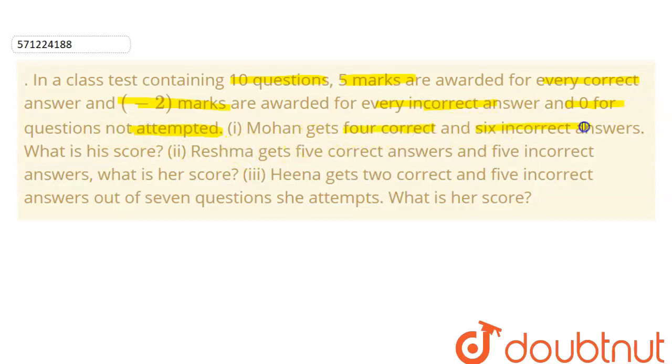Firstly, we will see what we are given. We are given that the total number of questions is equal to 10. They say that if the question is correct, the number of marks we get is plus 5. And the number of marks we get if the answer is incorrect is minus 2.